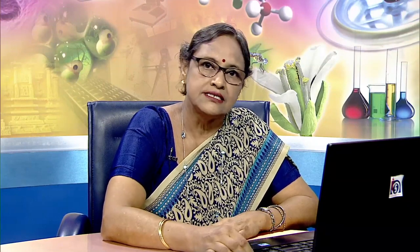This is a summary depiction of the greenhouse gases in our atmosphere. The major part is occupied by carbon dioxide at about 81 percent. Next comes methane at about 11 percent, followed by nitrous oxide at 6 percent, and a smaller volume of fluorinated gases at about 3 percent.